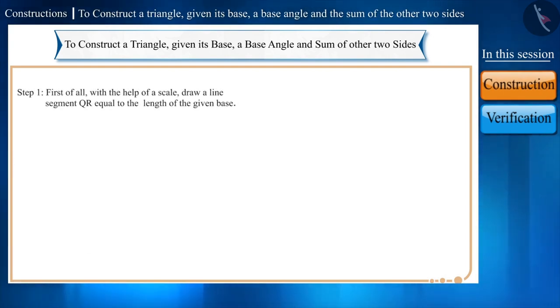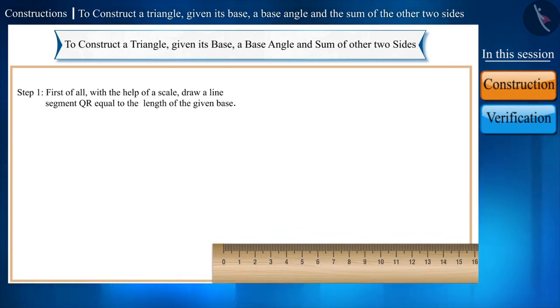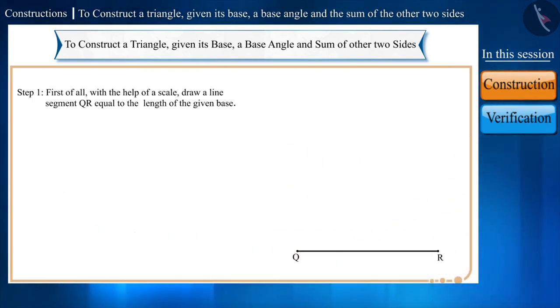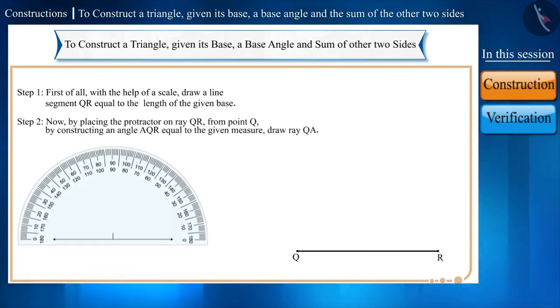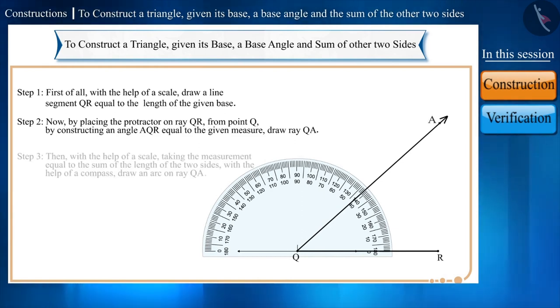Step 1: First of all, with the help of a scale, draw a line segment QR equal to the length of the given base. Step 2: Now, by placing the protractor on ray QR from point Q, by constructing an angle AQR equal to the given measure, draw ray QA.